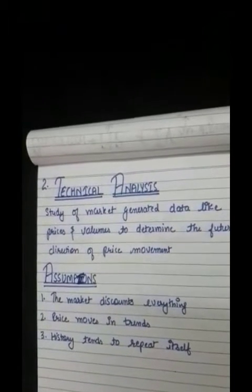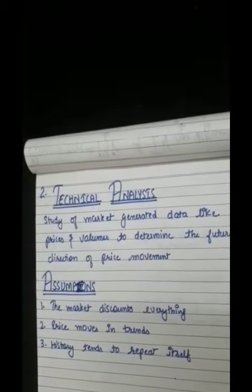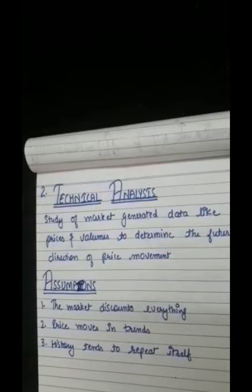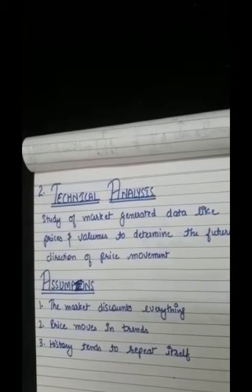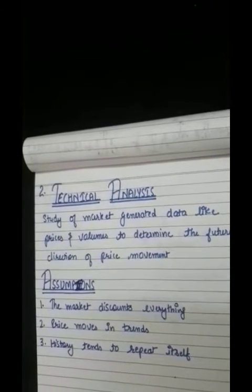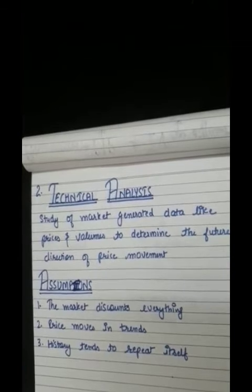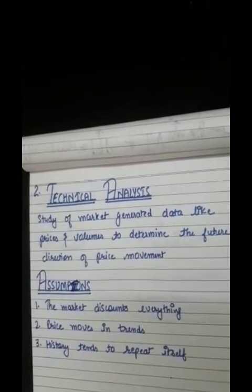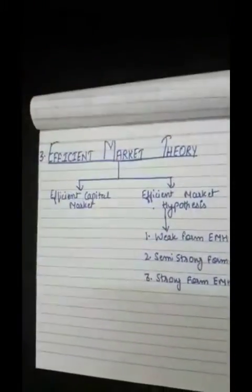Technical analysis includes three assumptions. First, the market discounts everything — it only considers price movement, ignoring the fundamental factors of the company. Second, price moves in trends — price movements are believed to follow trends, meaning that after a trend is established, future price movement is more likely to continue in the same direction. Third, history tends to repeat itself — the repetitive nature of price movement is attributed to market psychology.